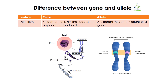A gene is a segment of DNA that codes for a specific trait or function. In a cell, DNA is present in the form of chromatin, but when the cell starts to divide, that chromatin condenses into chromosomes. The chromosomes are made up of DNA — when you unwind a chromosome, you get DNA. Not all DNA is a gene, but a particular segment of DNA is known as a gene. This gene is related to some phenotype or trait, for example, eye color, hair color, or height.